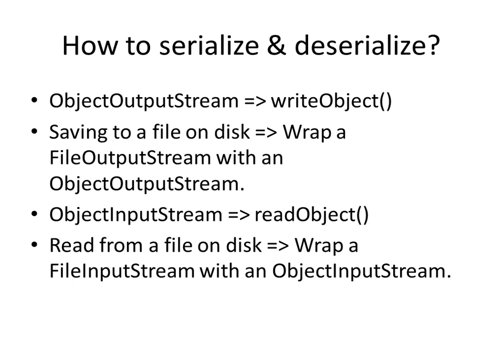Similarly, when you read from a file, you use the ObjectInputStream and call the readObject method. If you are reading a serialized object from a file on disk, you wrap a FileInputStream with an ObjectInputStream. This follows the decorator pattern, which lets you add additional responsibilities by wrapping an object with another object. The FileInputStream reads from the file and gives you bytes, and then the ObjectInputStream interprets those bytes as an object.